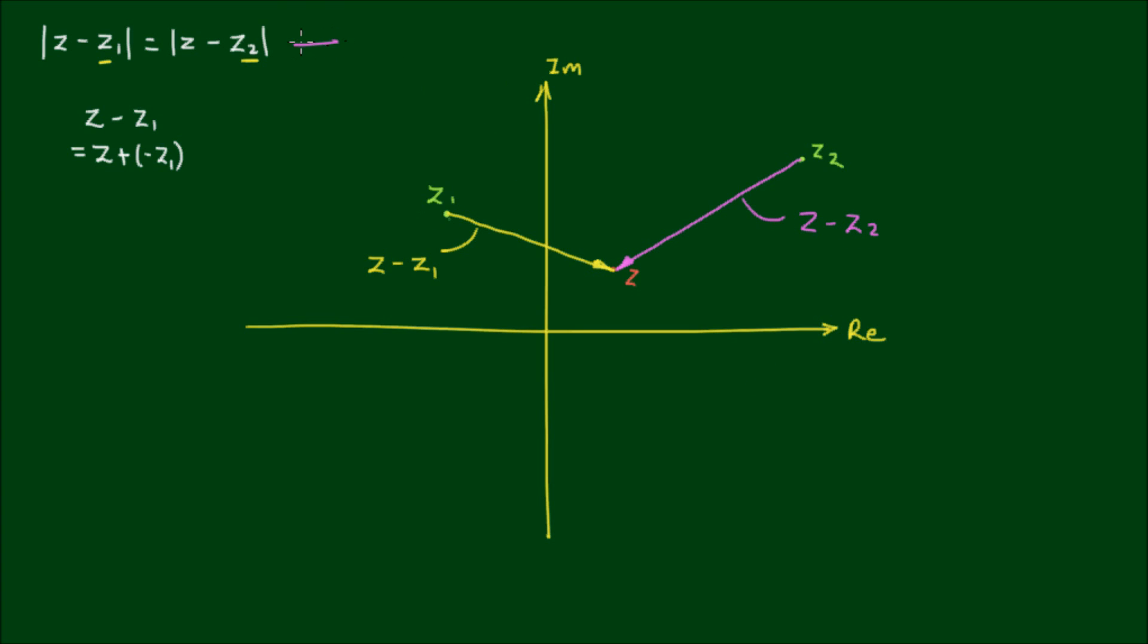And now what this equation is saying is that the length of this vector and the length of this vector must equal each other. So wherever I put this variable point z, this distance from z₁ to z and this distance from z₂ to z must always be equal.